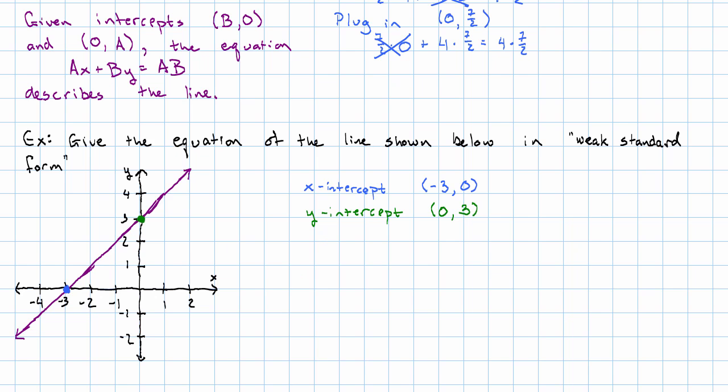And then that's going to be equal to the product of those two numbers. So simplifying that a little bit, our equation is going to be 3x minus 3y equals negative 9.